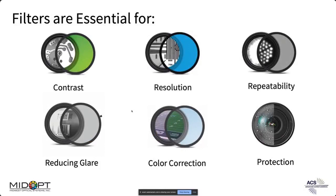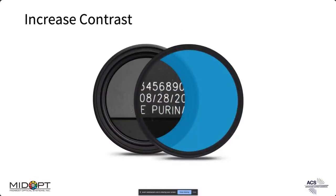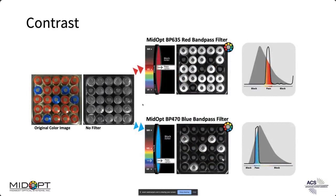Filters are helpful for lots of things, and we're going to focus on six primary areas this morning: contrast, resolution, repeatability, reducing glare, color correction, and protection. Filters help create contrast — in machine vision, contrast is the name of the game. Whether you're trying to detect a barcode against a background, find adhesive on a part, or look for a marking, getting a clear image is the data your application needs.